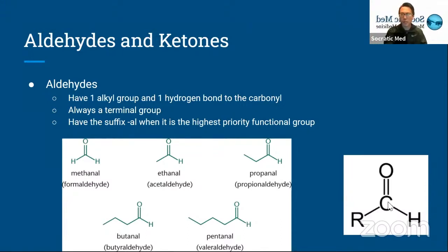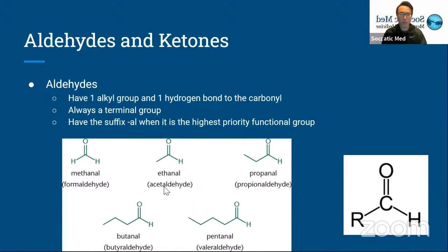It has a central carbon with a carbonyl, so it's double bonded to an oxygen, then attached to an R group — usually an alkyl chain — and finally a hydrogen as well. On the picture below, you can see five general aldehydes that you'll commonly see on the MCAT. Some of them have more specific names.